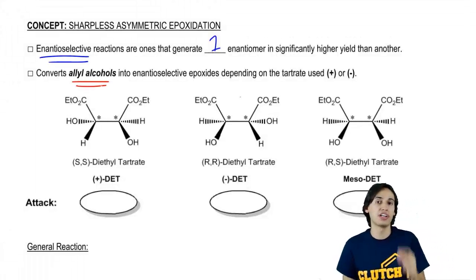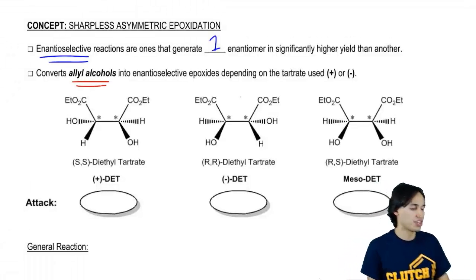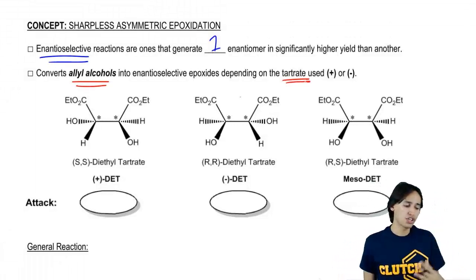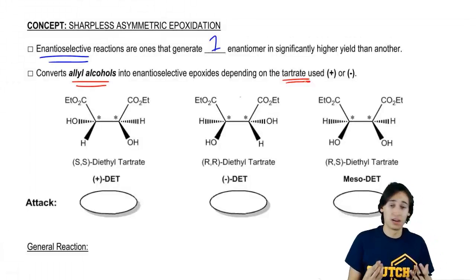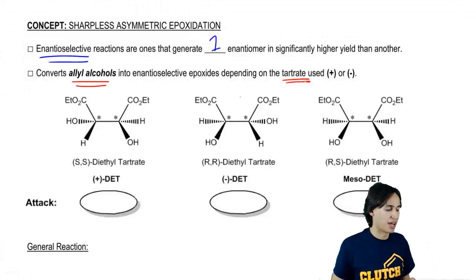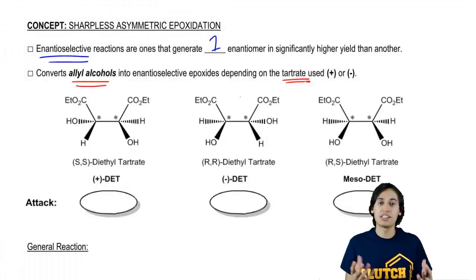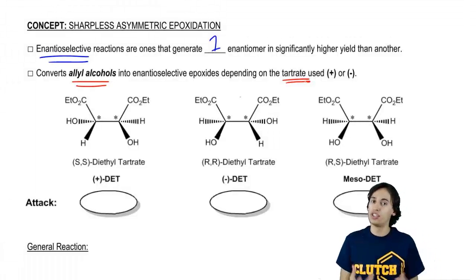Then it's going to generate a certain epoxide based on the type of tartrate that is used. These tartrates are basically functional groups that have different chiral centers. What you're going to find is that there's three different possibilities of types of tartrates that I could use in this reaction.